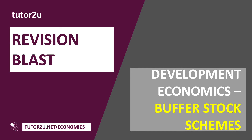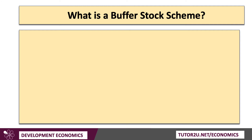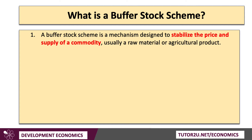Welcome to a Development Economics Revision Blast session looking at Buffer Stock Schemes. What is a Buffer Stock Scheme? Basically it's a form of price support, often targeted at farmers in low or middle income countries. The aim is to stabilise the price and the supply of a commodity — typically a raw material such as coffee or cocoa, an agricultural product of some type.